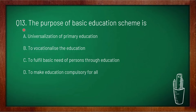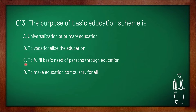Question 13: the purpose of the basic education scheme is — option A: universalization of primary education, option B: to vocalize the education, option C: to fulfill the basic needs of a person through education, option D: to make education compulsory for work. Option C is correct — the purpose of the basic education scheme is to fulfill the basic needs of a person through education.